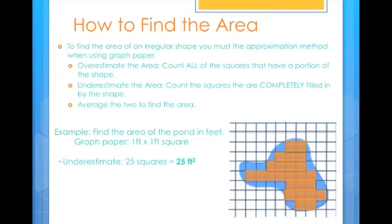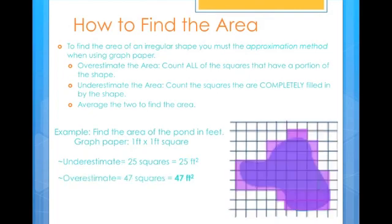Next, I am going to overestimate the area. I do this by counting all of the blocks that contain any portion of the image. Even if it is just a very small amount, I will still count it. When I do this, it equals 47 squares, which is 47 square feet.